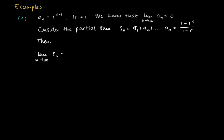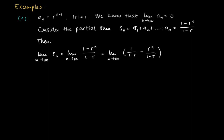Now we try to calculate the limit as n goes to infinity of s_n. This is no more than the limit as n goes to infinity of (1 minus r^n) divided by (1 minus r). We can rewrite this as 1/(1 minus r) minus r^n/(1 minus r), so now we have two pieces and we calculate the limit of those two pieces separately.